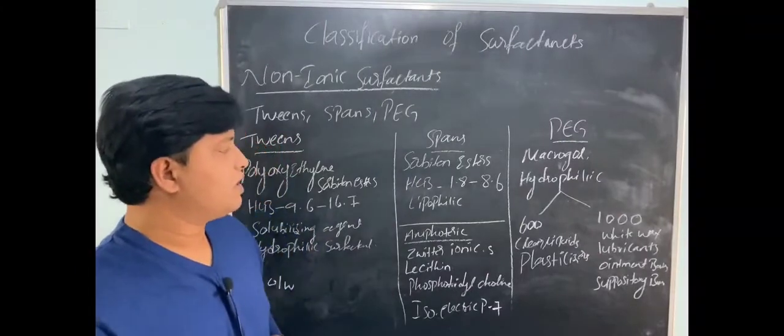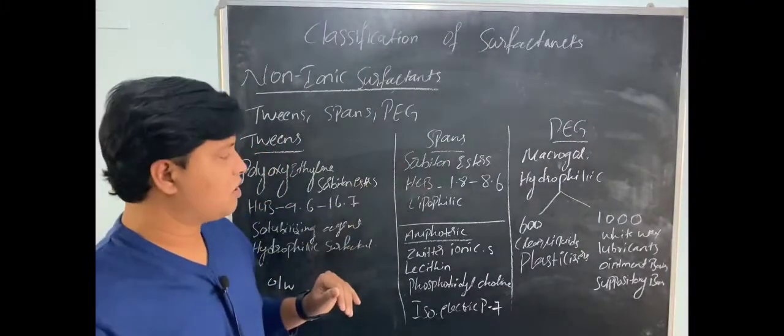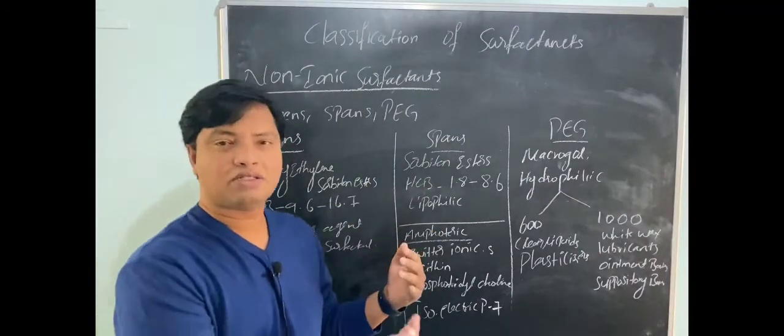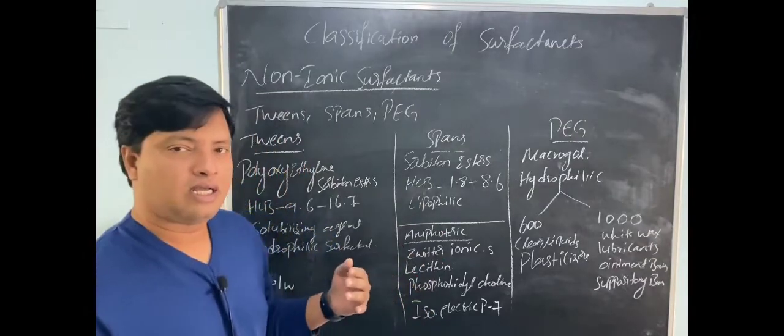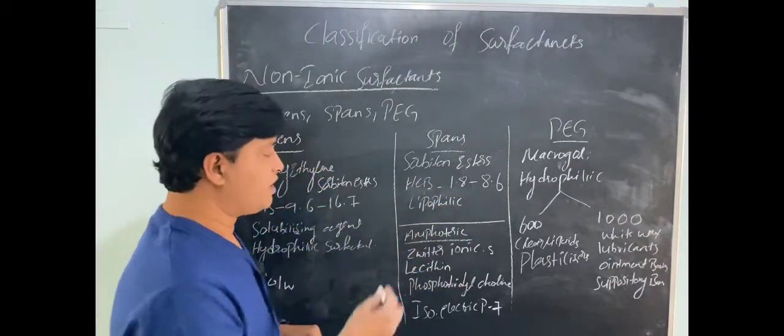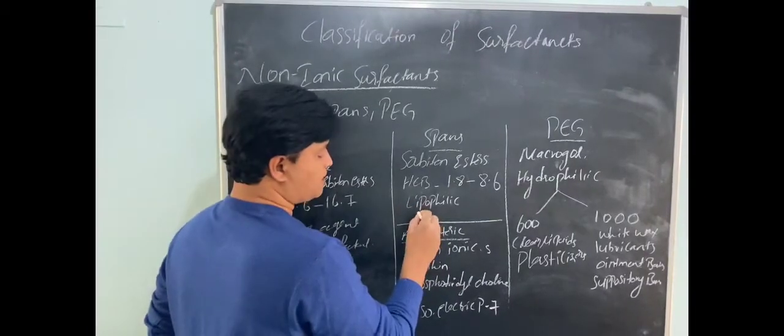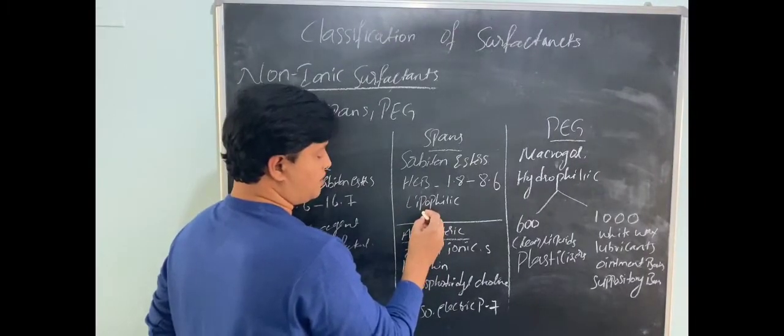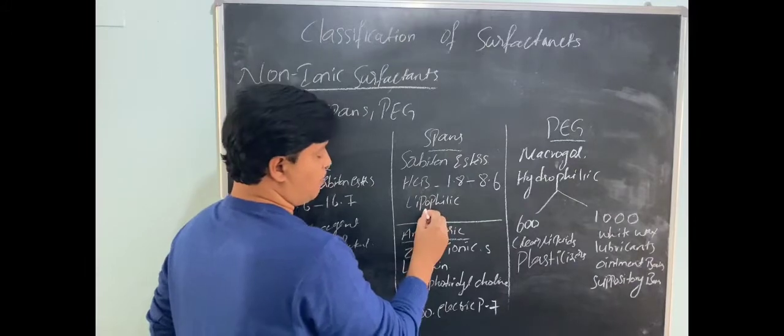Sorbitan esters spans have HLB values towards the left side of HLB scale, 1 to 8. They are lipophilic. If you use spans only, you will get water-in-oil emulsion because they are lipophilic in nature.